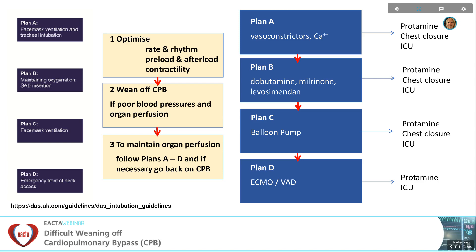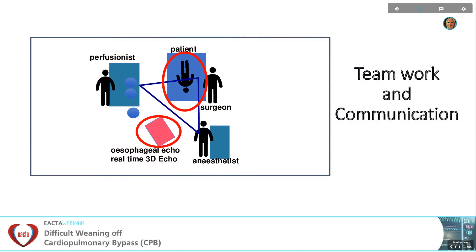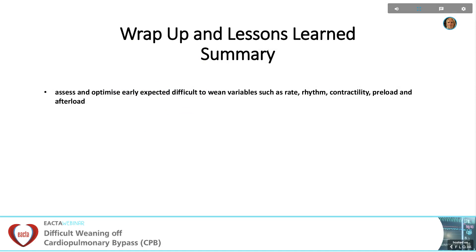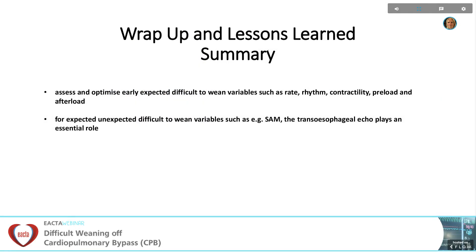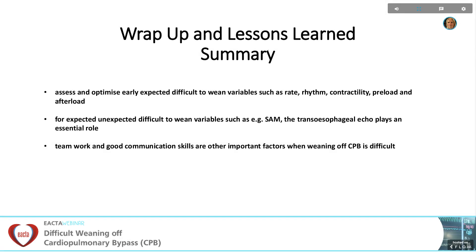For this, as mentioned before, teamwork and good communication skills are essential. To summarise, we need to assess and optimise early expected difficult to wean variables such as rate, rhythm, contractility, preload, and afterload. For expected unexpected difficult to wean variables, such as SAM, the transoesophageal echo plays an essential role. Teamwork and good communication skills are other important factors when weaning of cardiopulmonary bypass is difficult, and Plan C and Plan D can be avoided in most cases.